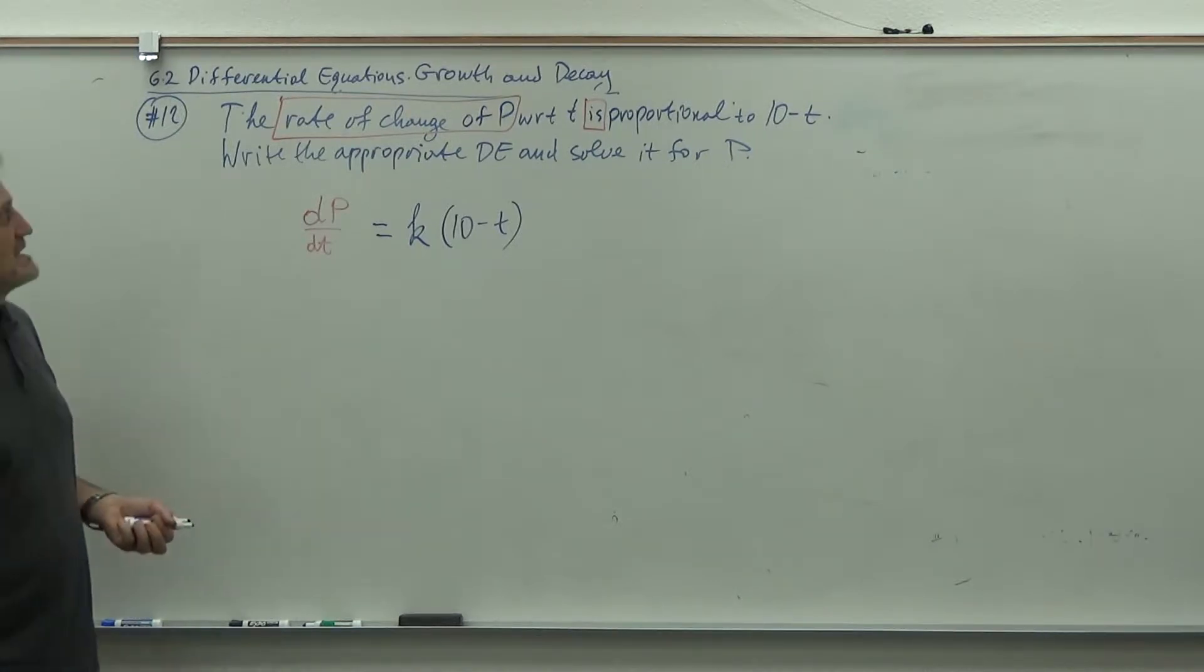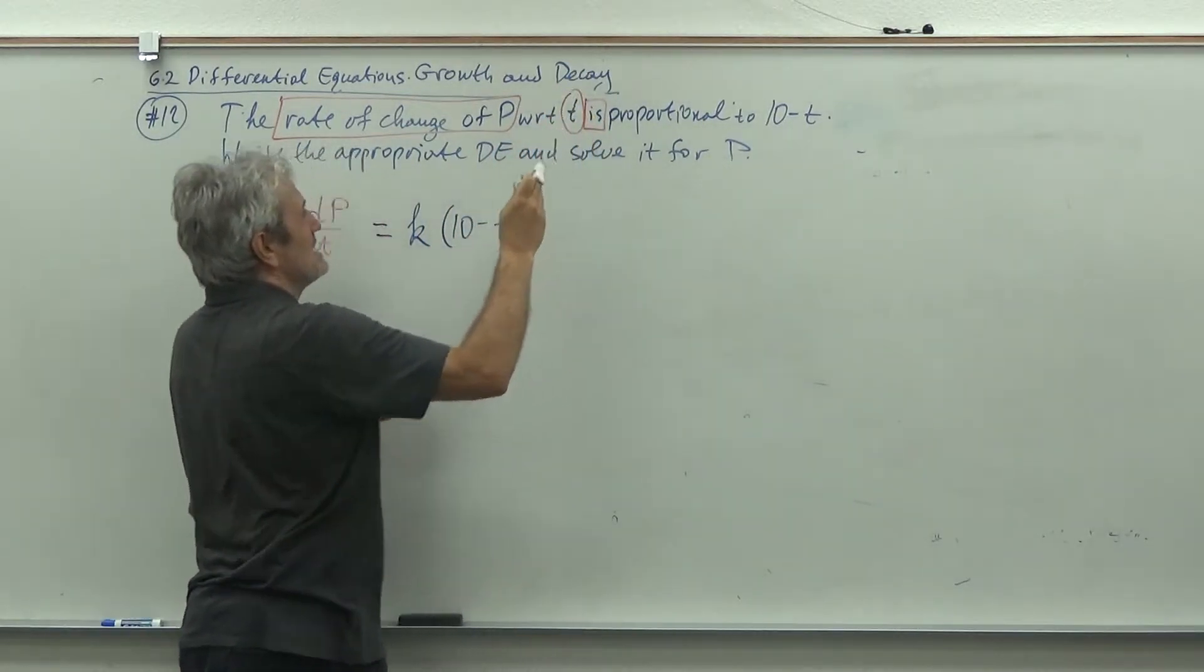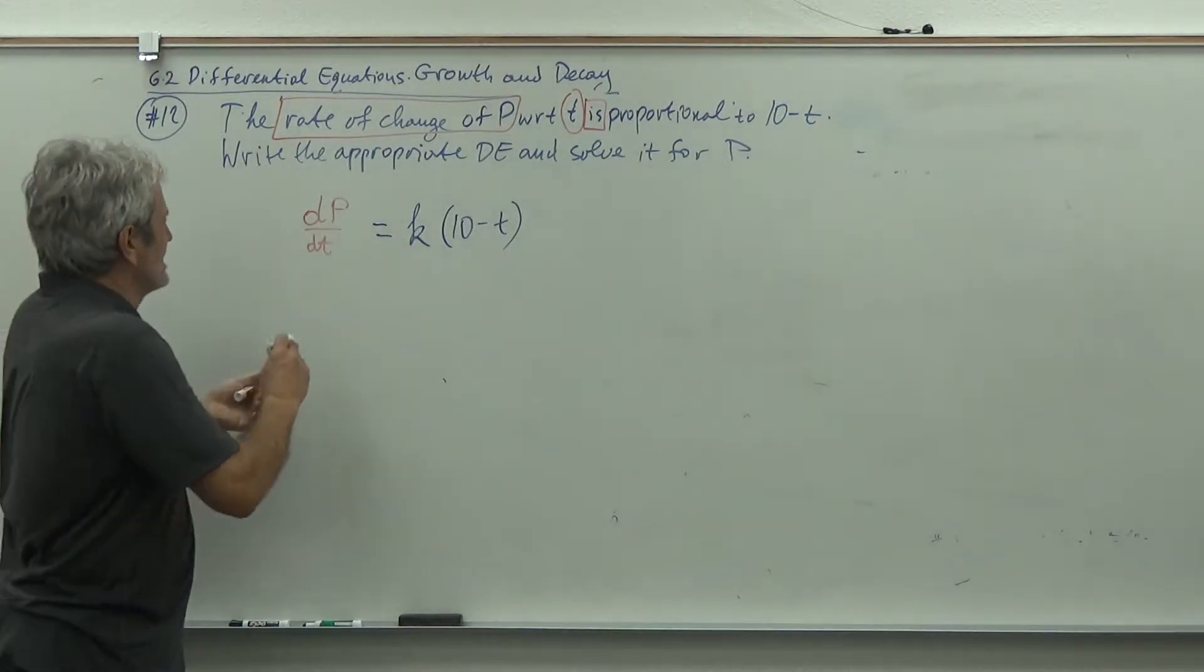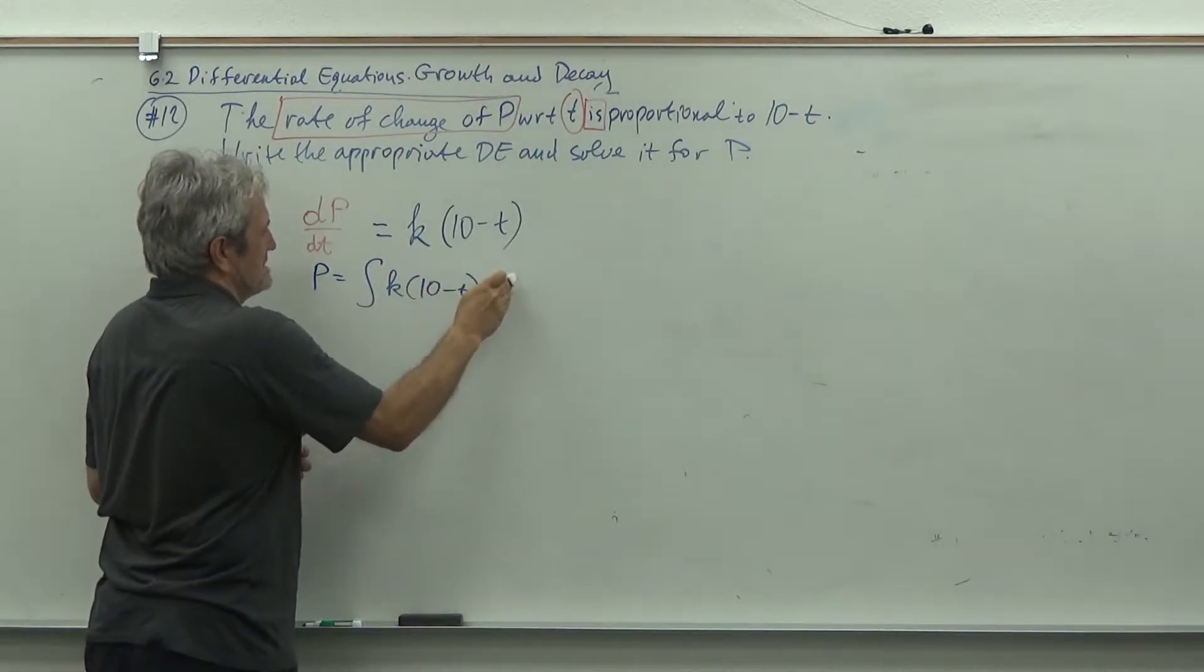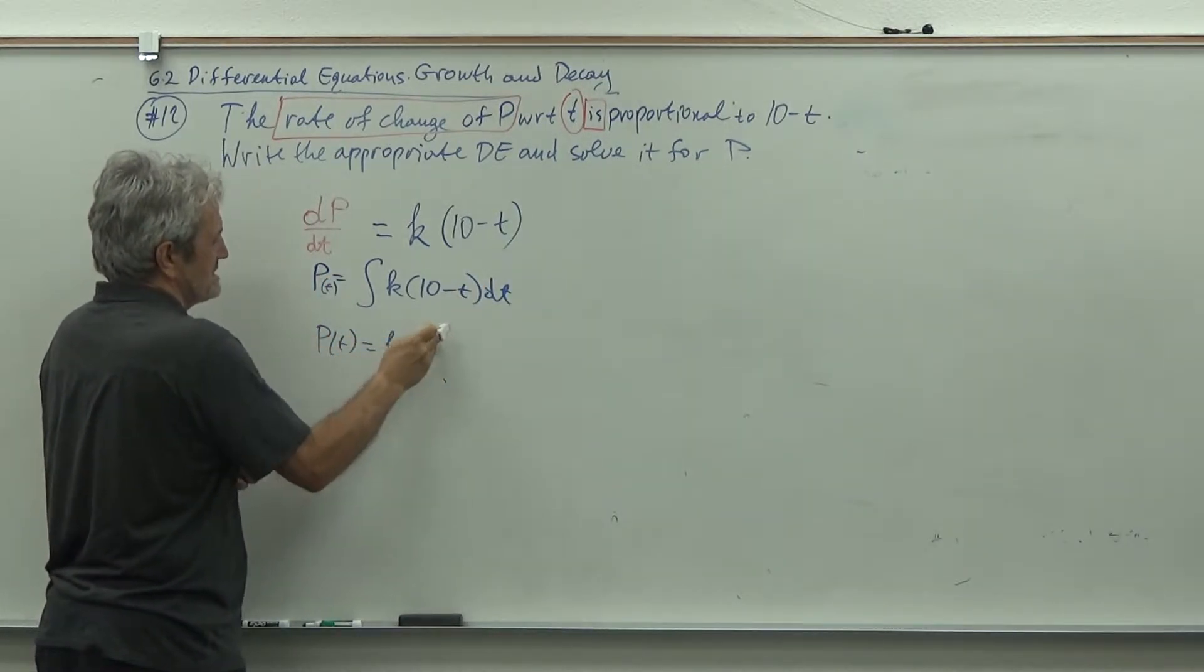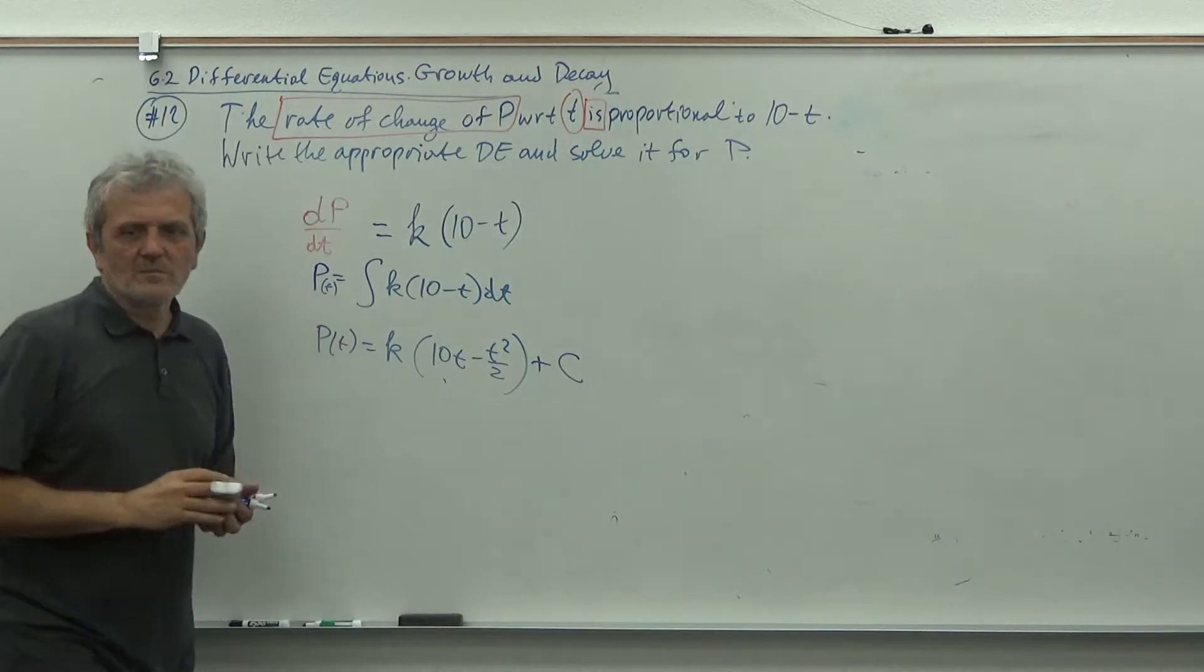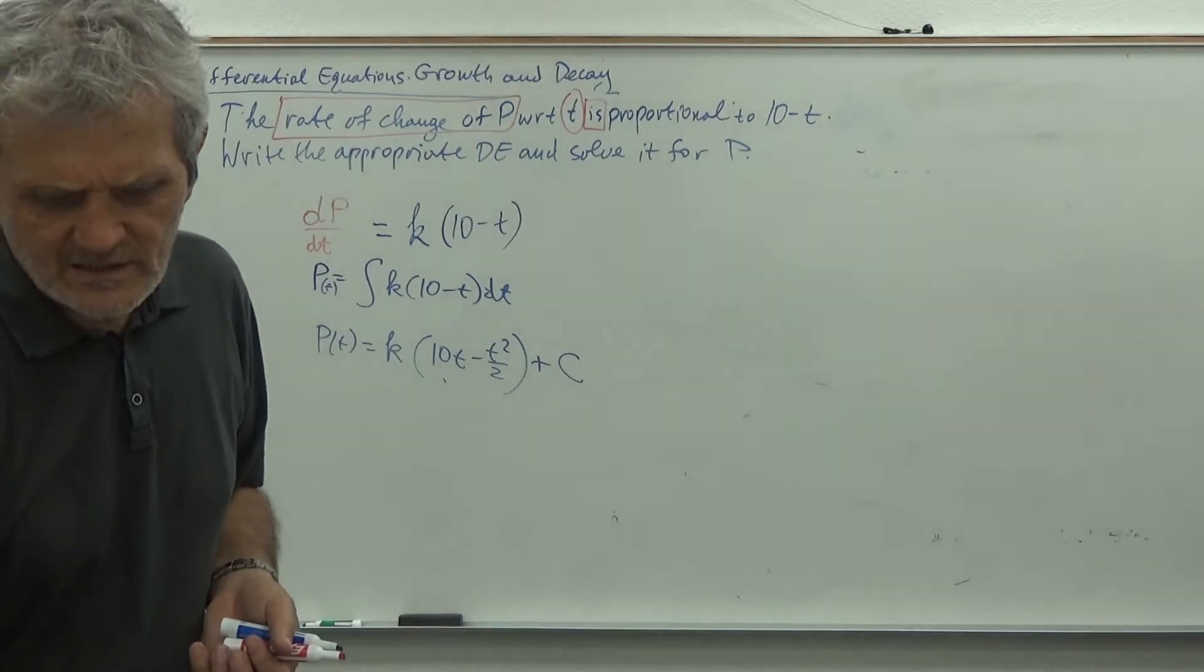Who is on the left side? The rate of change of P, and calculus one tells you that's the first derivative. So it says first derivative of P with respect to T is k times 10 minus T. And how do you solve it? If I have a derivative, how do I get P itself? You just integrate. So P of T is k times integral of 10 minus T dT, which is k times 10T minus T squared over two plus C. That's it.